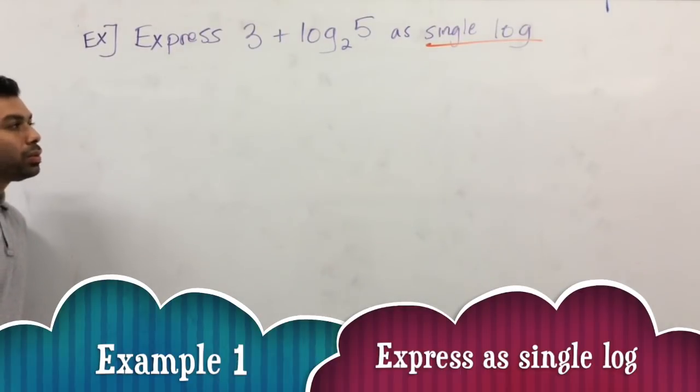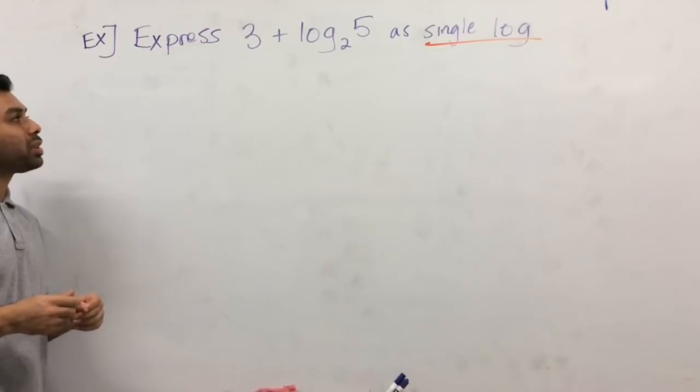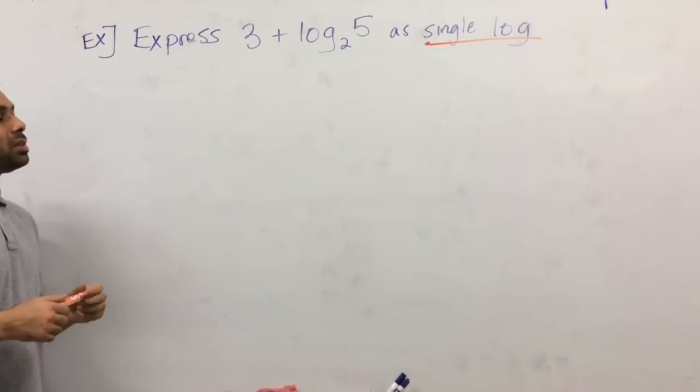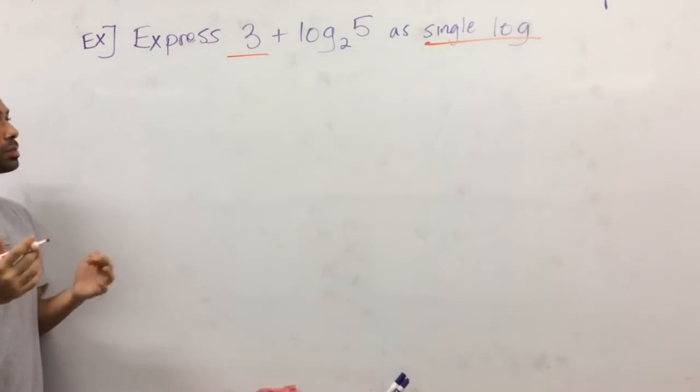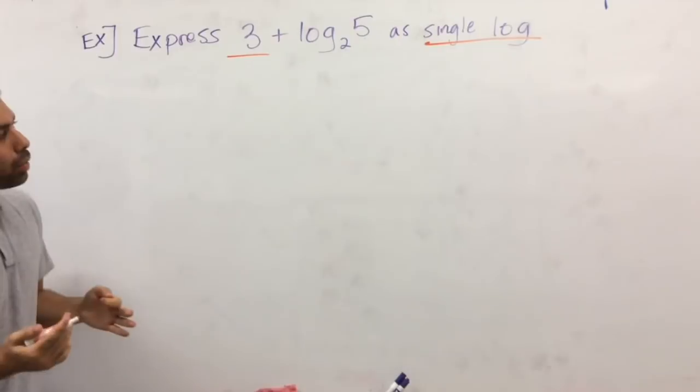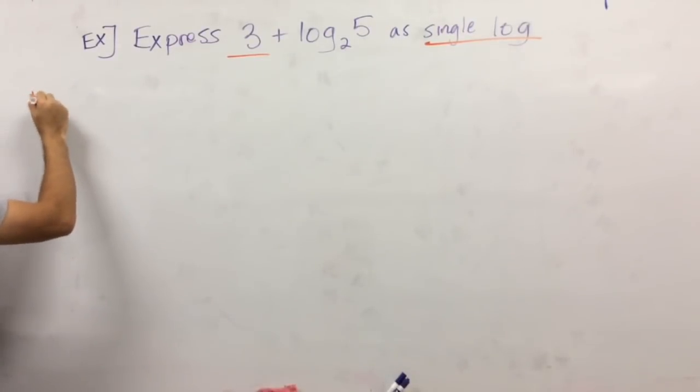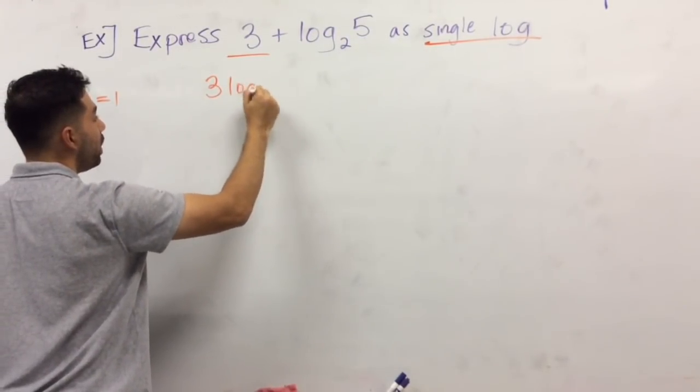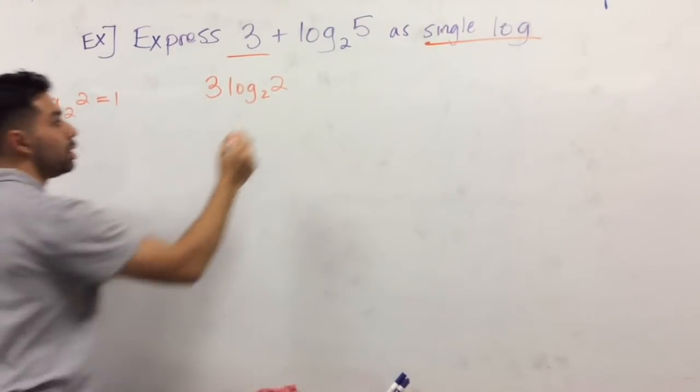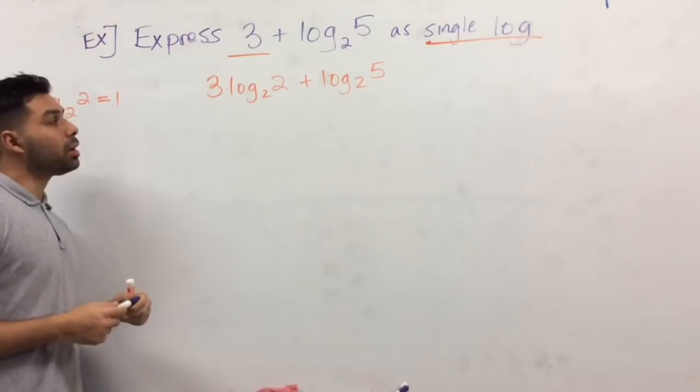All right, a quick example that will show you a lot of the laws that we have talked about in this video as well as before. The question is, express 3 plus log of base 2, 5 as a single log. Now, the first place you do want to start is with this 3. And I would put it into log formation. Now, if you're probably wondering how you want to do that. Since we're already dealing with log base of 2, and you should be able to remember that log base of 2, 2 is just 1. Well, how can I get 3 from that? I can simply say 3 times log of base 2 of 2 is 3. And have log of base 2, 5.